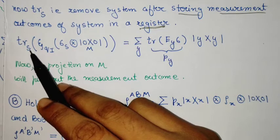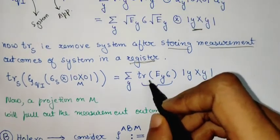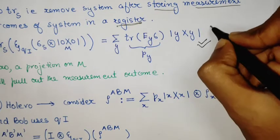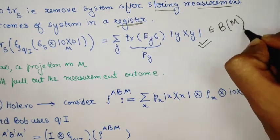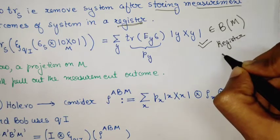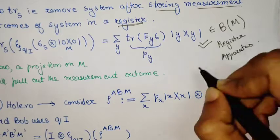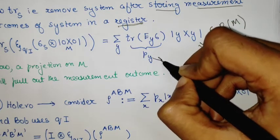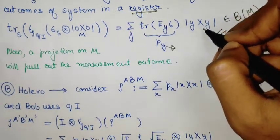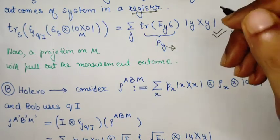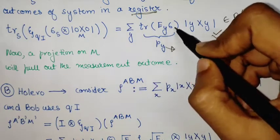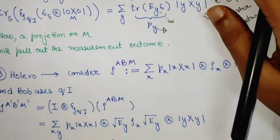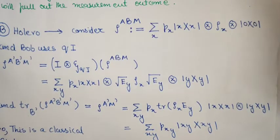As you trace over the system using the cyclicity of trace, you get a particular state belonging to the bounded operators on the M space, which is the register or apparatus. The coefficients associated with this orthonormal state are just the measurement outcomes. You can perform a projection measurement, asking your measurement apparatus for the value of the outcome corresponding to measuring the POVM y. We will use this in proving the Holevo bound.